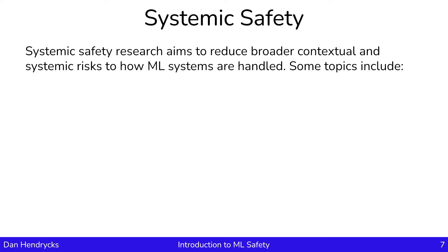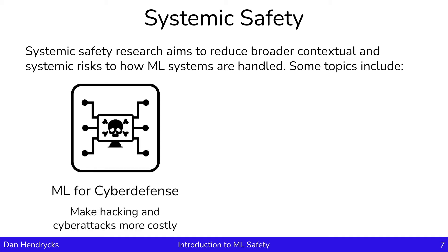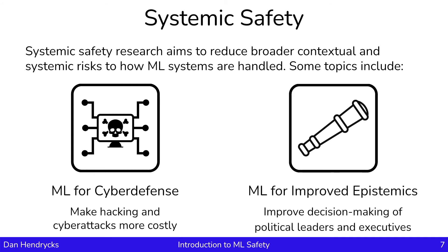Here's an example area in systemic safety: machine learning for cyber defense. This is about making hacking and cyber attacks generally more costly. Another topic is machine learning for improved epistemics. A goal of this is to improve the decision-making of political leaders and executives. Since they are influencing the machine learning systems, the quality of their decisions and how they want to direct these models will definitely impact the ultimate safety of these models.